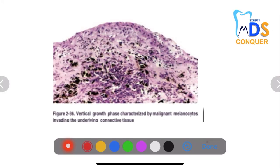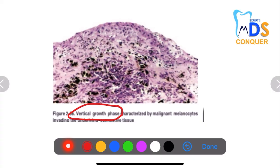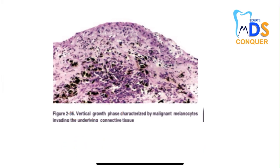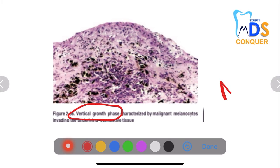Here you can see many malignant melanocytes invading the underlying connective tissue. This is the vertical growth phase, which is characterized by malignant melanocytes invading the underlying connective tissue, seen with malignant melanoma.